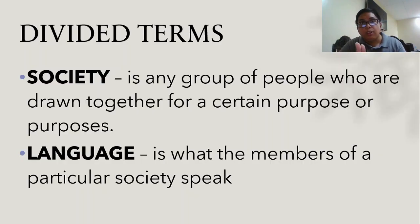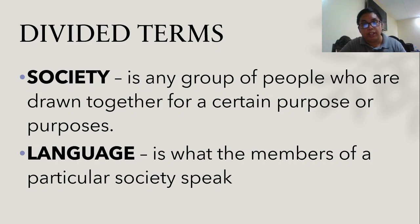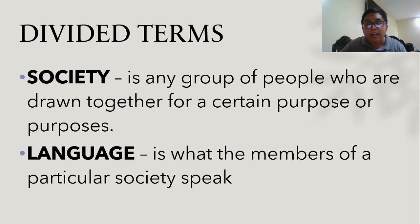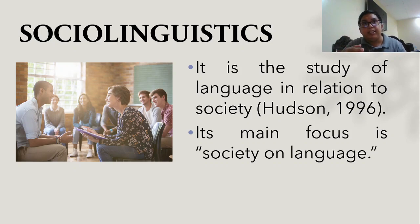Let's first look at the divided terms between sociolinguistics: society and language. First, we have society — it is any group of people who are drawn together for a certain purpose or purposes. Next, we have language — this is what the members of a particular society speak. Therefore, both of them are always interconnected with each other. In a society there's language, and in a language you will discover what society they belong to.